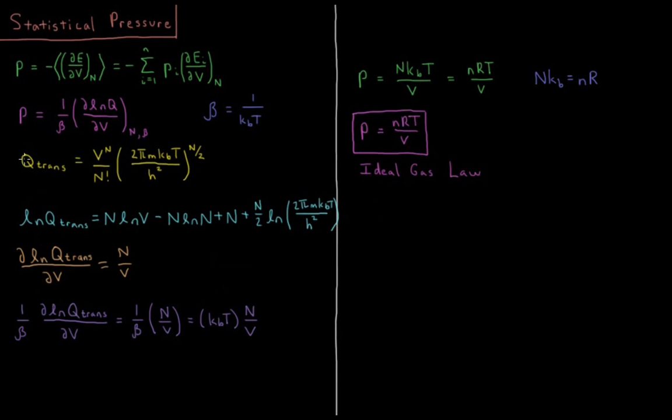We'll remind ourselves that the translational partition function of an ideal gas, or system of N ideal gas particles, is equal to volume to the N over N factorial times 2 pi MKT over H squared to the N over 2. V is volume of the system, N is the number of particles, M is the mass of an individual ideal gas particle, KB is the Boltzmann constant, T is the temperature, and H is Planck's constant.